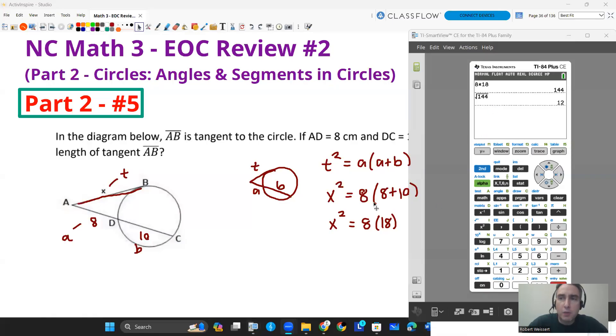We got X squared equals 8. 8 plus 10 is 18. From there, we can use our calculator and help solve the rest. 8 times 18 is 144. And then we'll want to square root it. So we'll get 12 as our answer. So the length of AB, tangent AB, is going to be 12 centimeters.